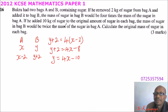The other statement is, if you add 10 kg to the original amount of sugar in each bag, the mass of sugar in bag B will be twice the mass in sugar in A. So here it means you add 10 to the original mass, that is X plus 10.